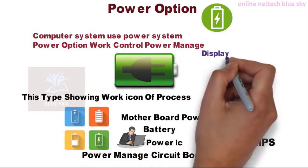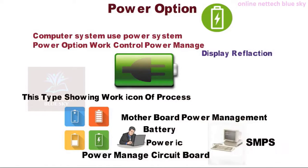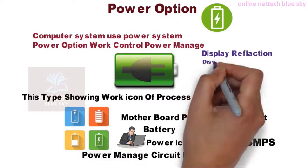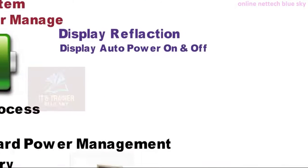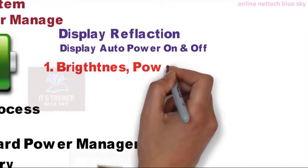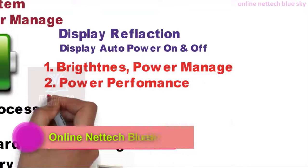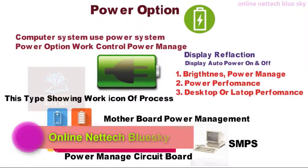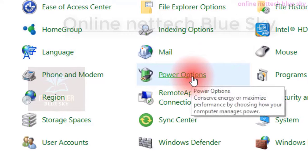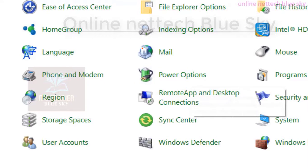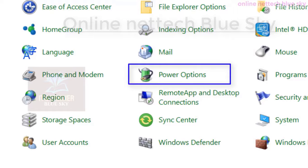What is the main display reflection and power connectivity? Display auto power on/off, brightness — power management systems are available. Power option controls power performance, and desktop or laptop performance can be greatly increased. Power option is very important, and I will show you every setting in this video.